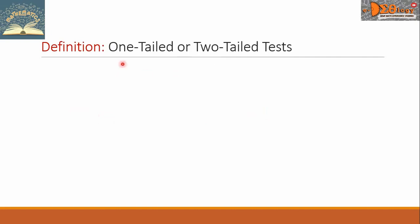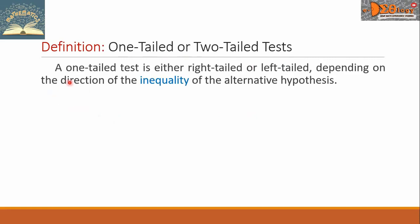Let us now define one-tailed or two-tailed tests. A one-tailed test is either right-tailed or left-tailed, depending on the direction of the inequality of the Alternative Hypothesis.